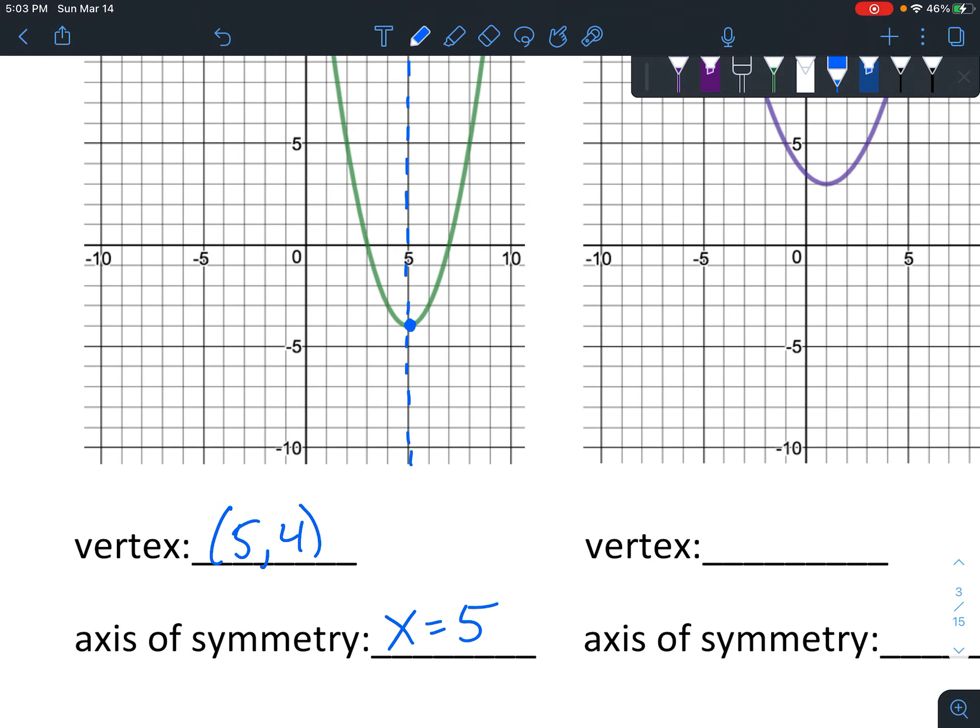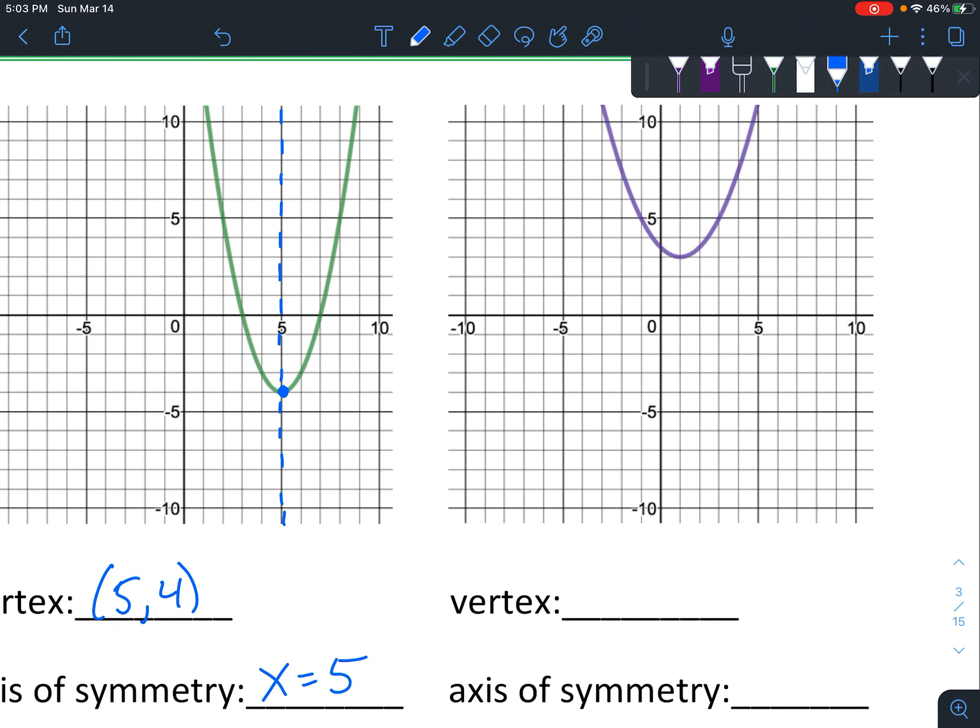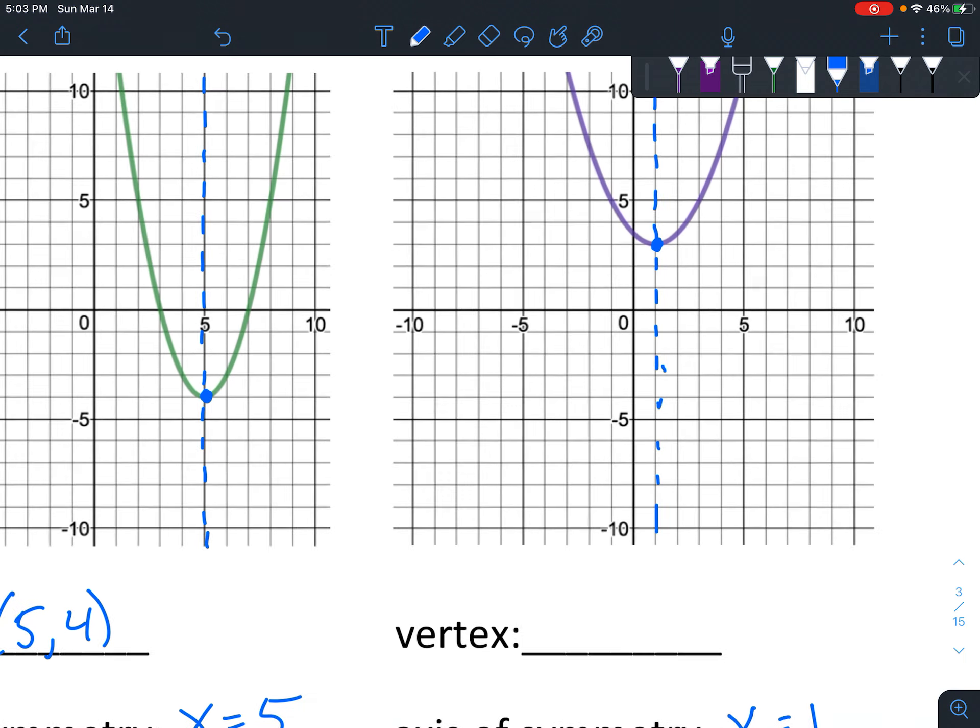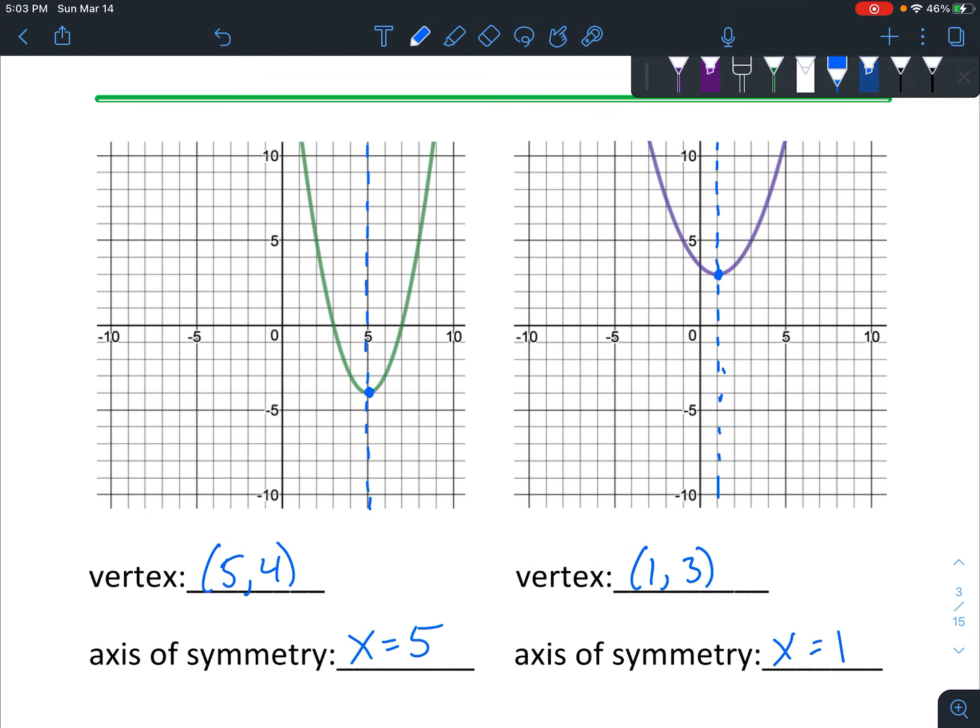And our axis of symmetry is right at x equals five. All right, last example. So look for that where we can draw that line that's right in the middle - that is the axis of symmetry, x equals one. And the vertex is that dot right there, right where it changes direction. So to get to that dot you go over one, up three, which means one comma three.